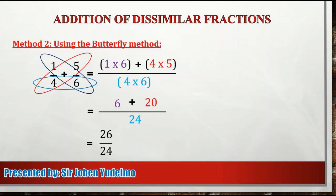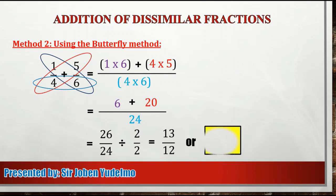Since 26 and 24 have a common divisor, pwede pa natin silang i-reduce into lowest term. So we are going to divide them by 2. 26 divided by 2, that's equal to 13. While 24 divided by 2, that's equal to 12. So our answer is 13 over 12, or 1 and 1/12.